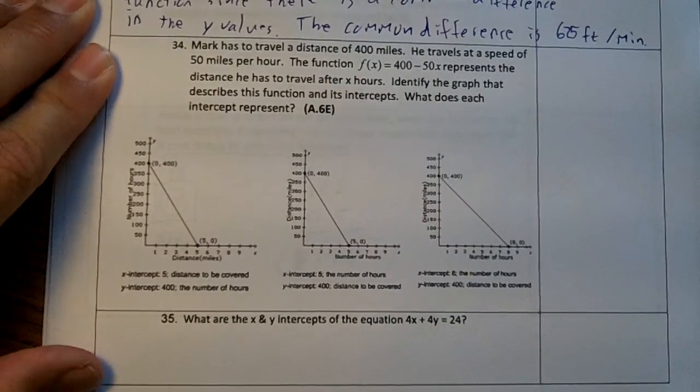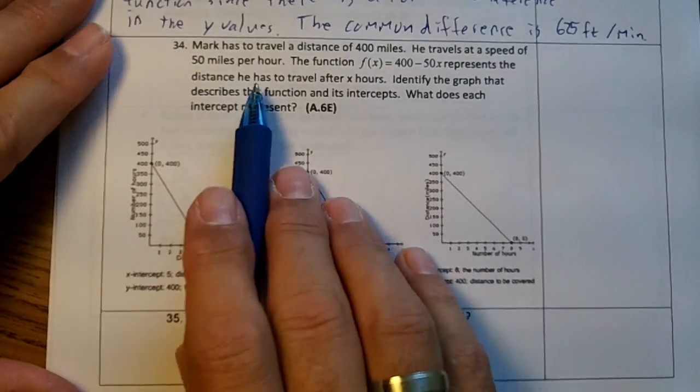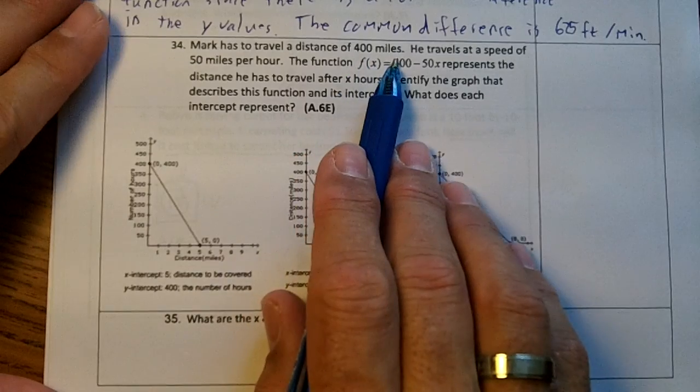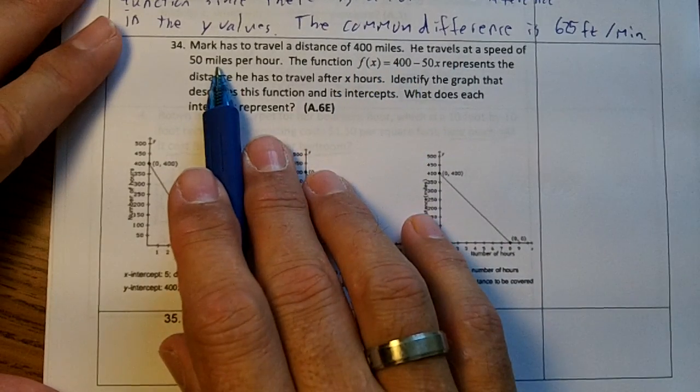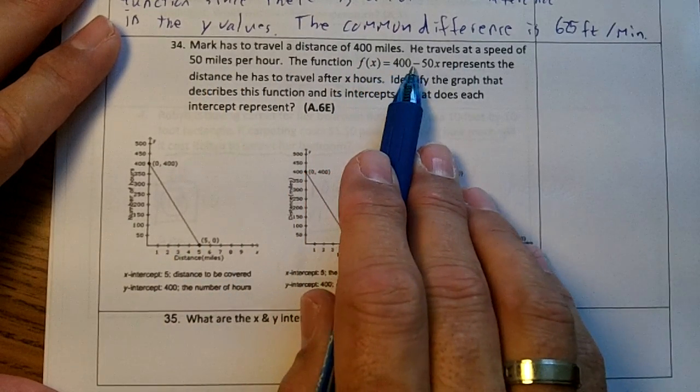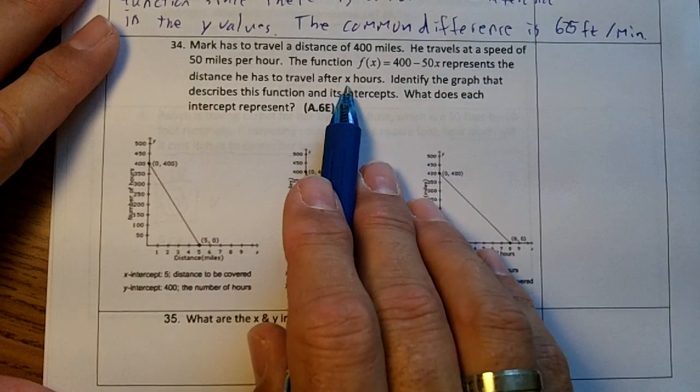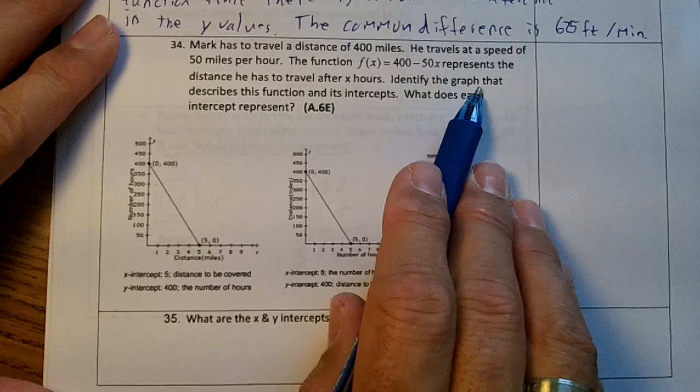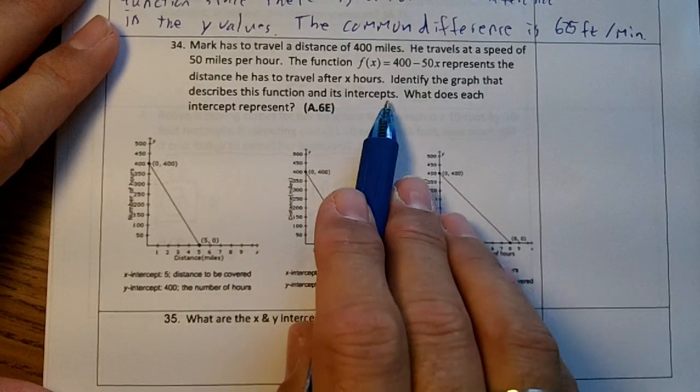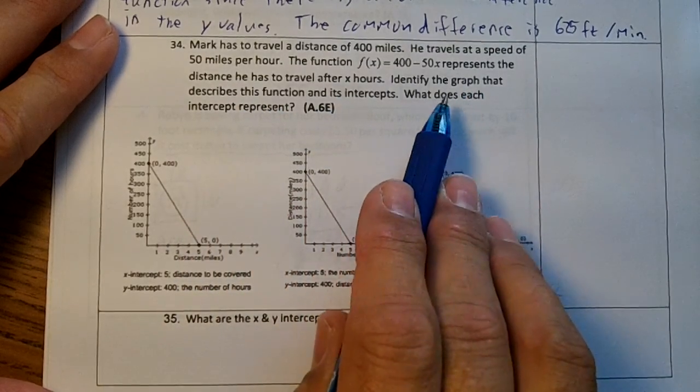The last two problems. Number 34. Mark has to travel a distance of 400 miles. He travels at a speed of 50 miles per hour. The function 400 minus 50x represents the distance he has to travel after x hours. Identify the graph that describes this function and its intercepts. What does each intercept represent?